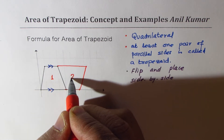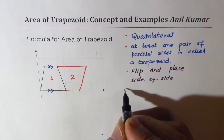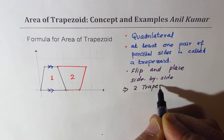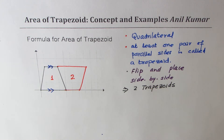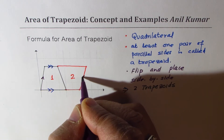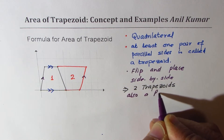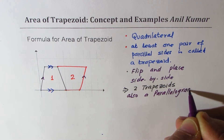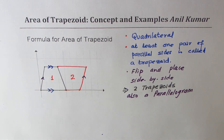If I place them side by side, I actually get exactly two trapezoids. So if I flip and place side by side, we'll get two trapezoids. Now, these two trapezoids also form a parallelogram. So you know the area of a parallelogram, and from there we can find the area of the trapezoid. So this is the basic concept.